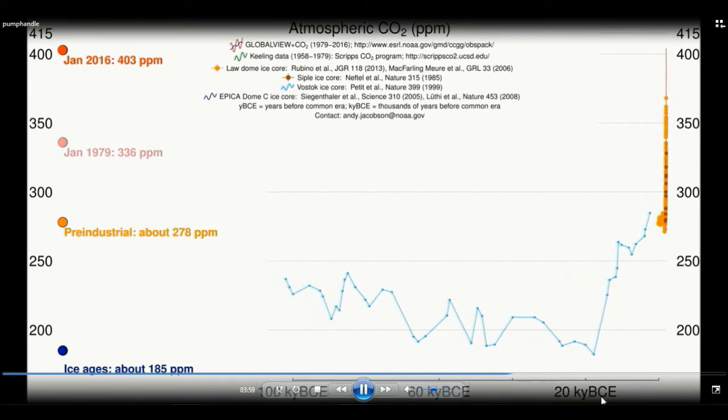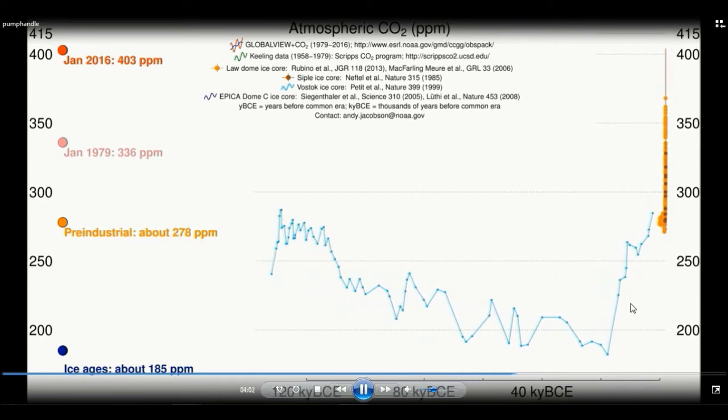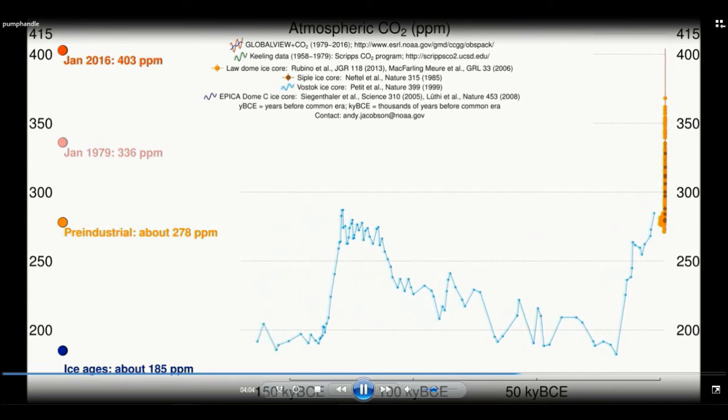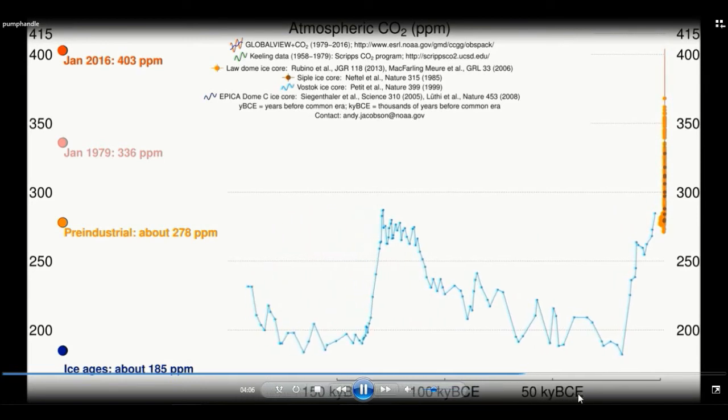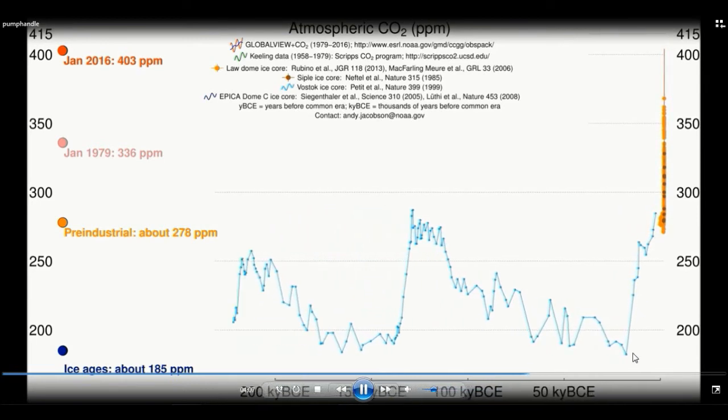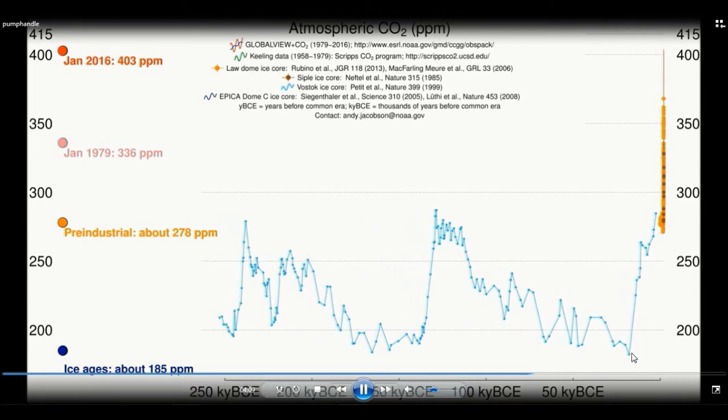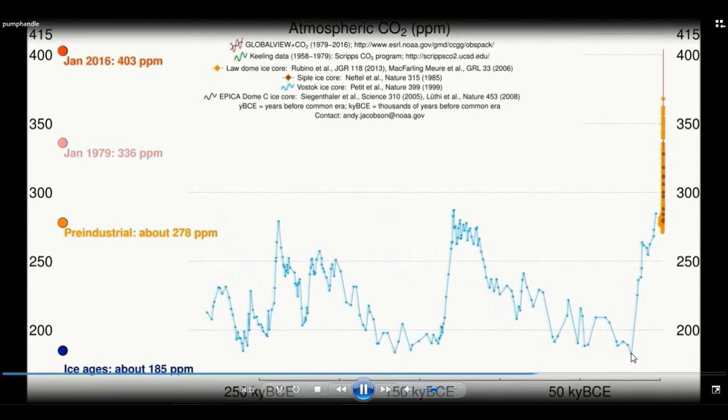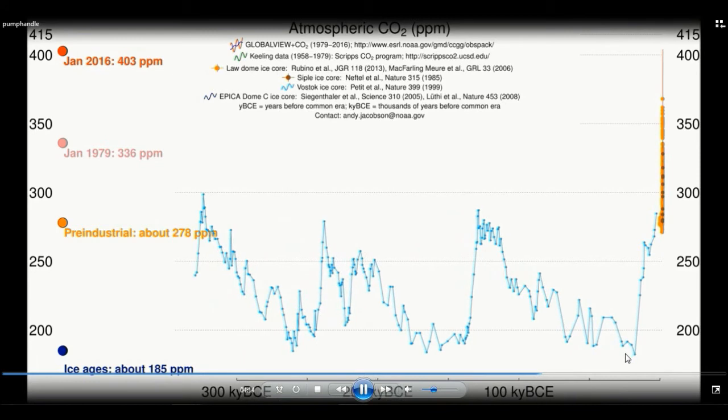This KYBCE stands for thousands of years before the common era. This would be like 50,000 years backwards in time. We are starting to see here the Milankovitch cycles which are natural cycles in carbon dioxide concentrations.